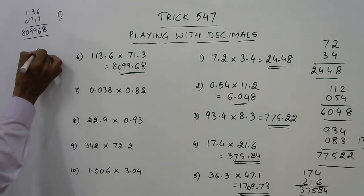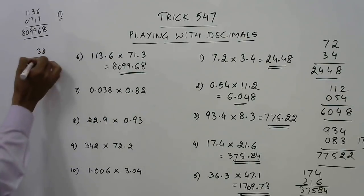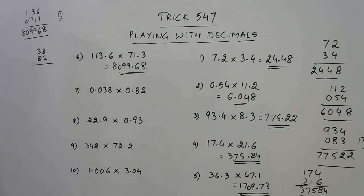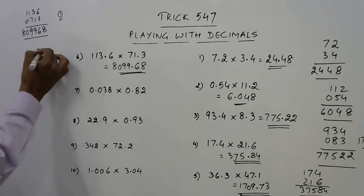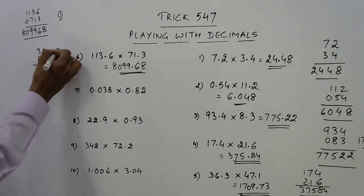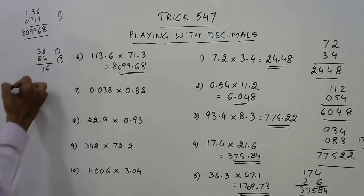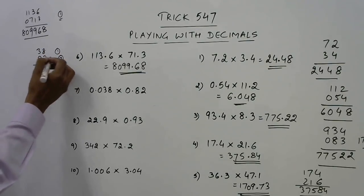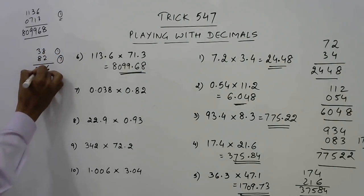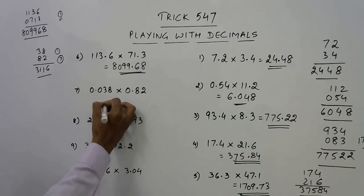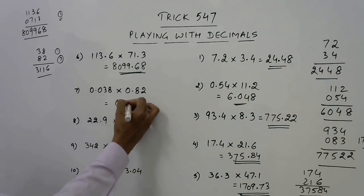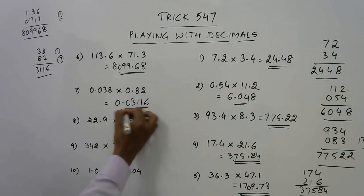Now, see this one: 38 and 82. So we can multiply now. The result is 3116. So 1, 2, 3, 4, 5, 0.03116 is the product.